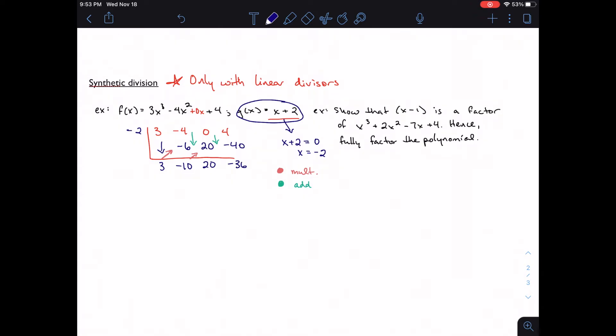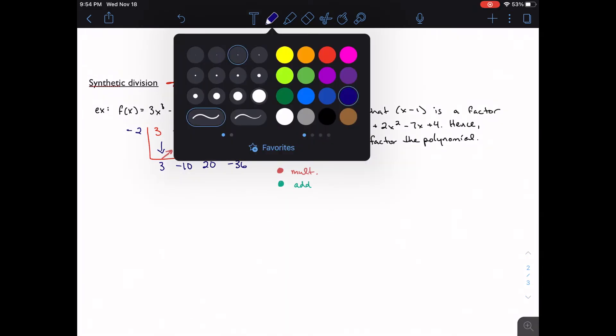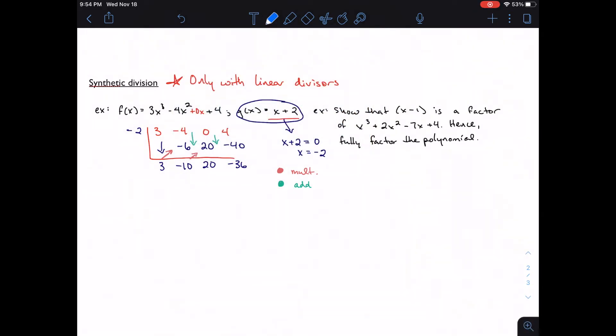To write this as a quotient, we're just going to insert powers starting one lower than the degree I started with. So if I'm starting with degree three, then the degree of my quotient has to be two. If I'm starting degree five, my quotient is going to be degree four. It's always one less. And then, of course, I can still account for my remainder by writing it in the same way that I did for long division. Negative 36 over whatever I'm dividing by. I can still do it that way.